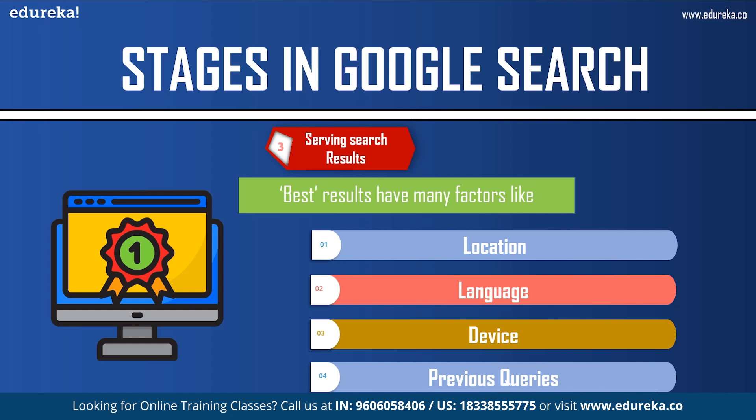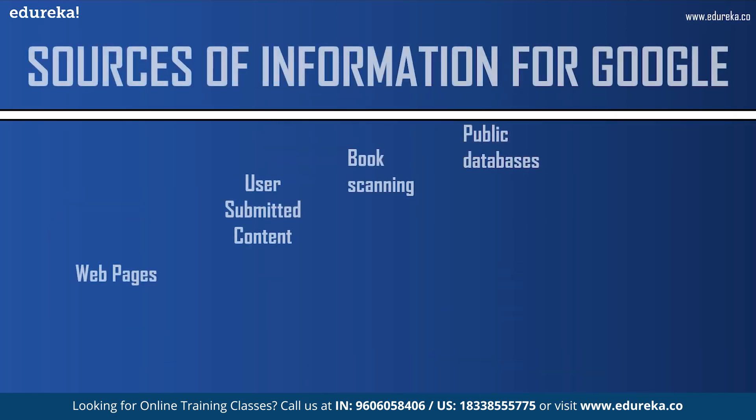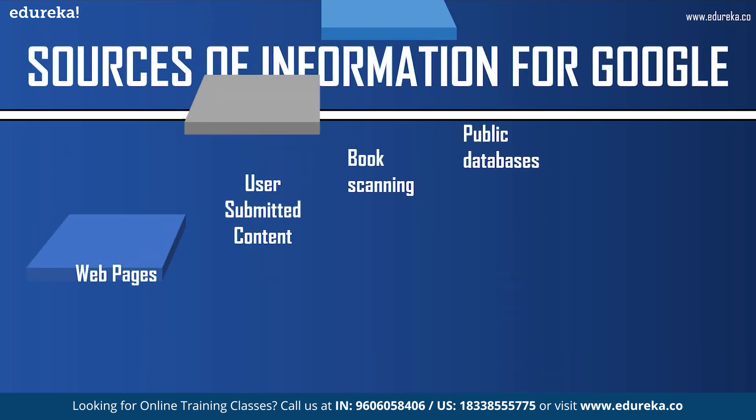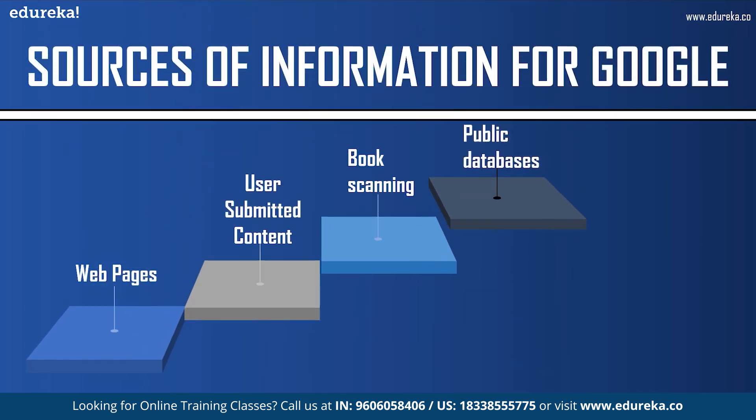Google gets information from many different sources, including web pages, user-submitted content such as Google My Business and Maps user submissions, book scanning, public databases on the internet, and many other sources.